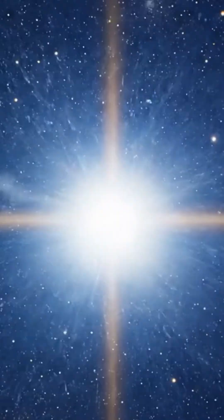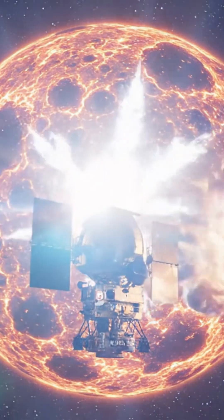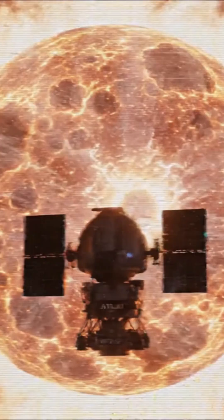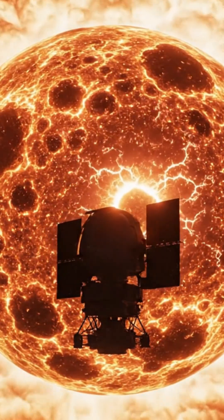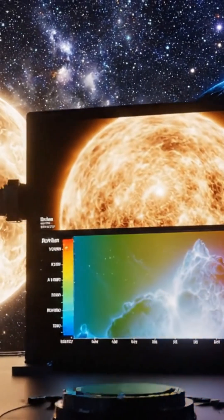It wasn't supposed to happen this way. The models predicted a slow brightening, a gentle rise in activity as solar heat vaporized its icy shell. But instead, Atlas detonated a surge in brightness that doubled within a single solar rotation.